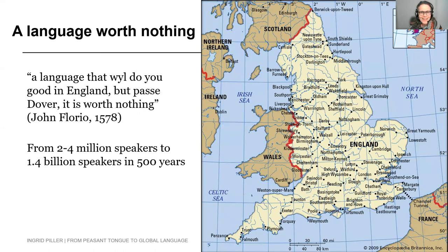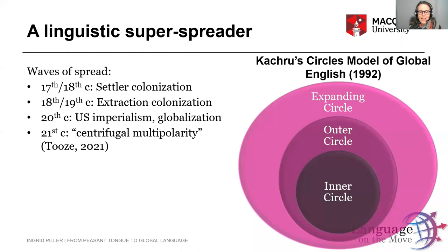Obviously, that did not happen by natural propagation — it happened through a system of spread. Part of what I want to talk about is how English became this linguistic super spreader. Many of you will be familiar with Kachru's circle model. American scholar Raj Kachru, in 1992, said of world Englishes that there are basically three types of Englishes: there is the English of the inner circle.